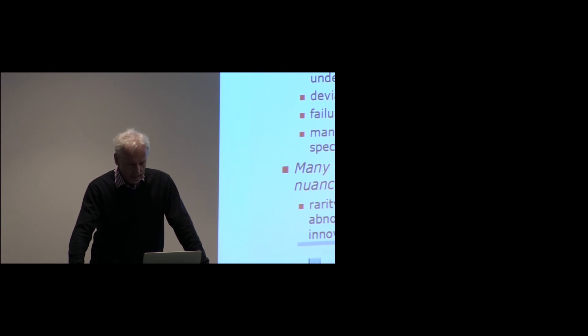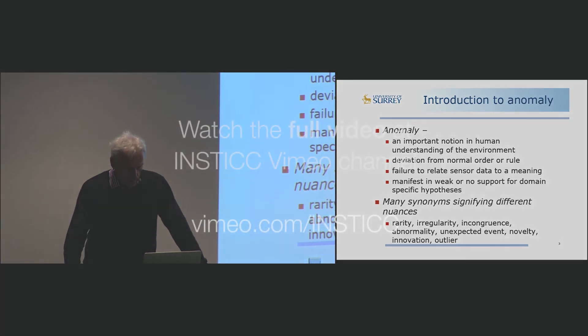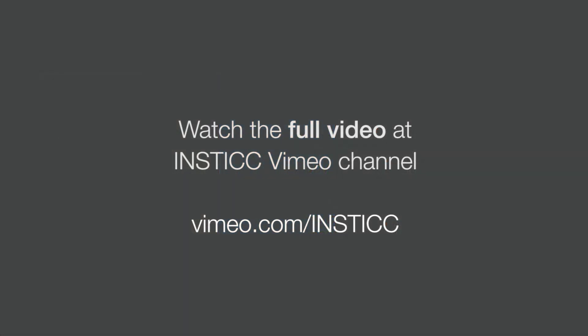One can look for anomaly or define it in many different ways. It can be something which just deviates from a known order. It can be understood as inability of a system to interpret sensor data. It may be interpreted as something where our models of various hypotheses do not provide any sensible interpretation for what is being perceived.